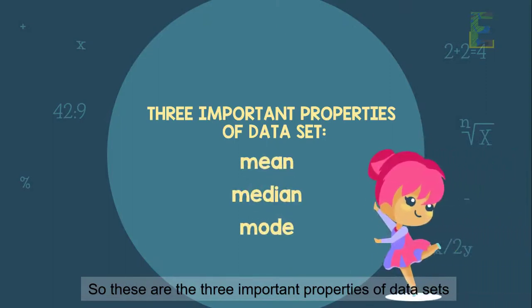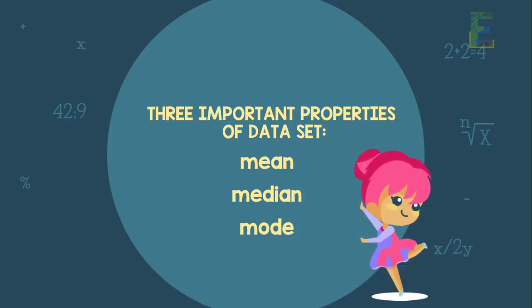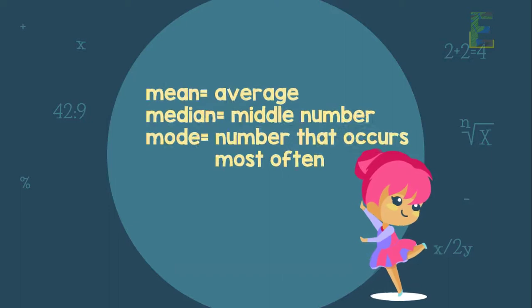So these are the three important properties of data sets. Just make sure that you won't interchange the process of mean, median, and mode. So always remember that mean means average, median is finding a middle number, and mode is number that occurs most often.